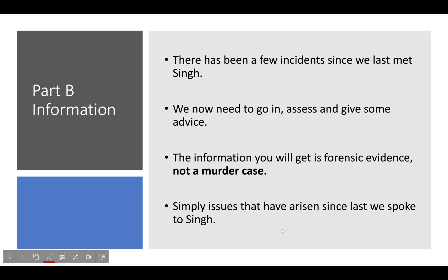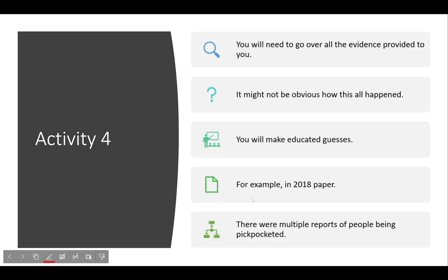Something has happened at his company and you are here to help. There have been a few incidents since last time you met Singh, and you need to assess and give advice. The information you will get is forensic evidence — not like a murder case, just evidence collected when a crime has been committed. For Activity 4, you will need to go over all the evidence provided.